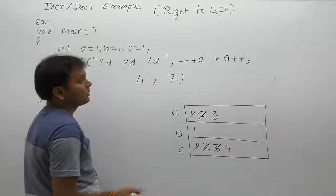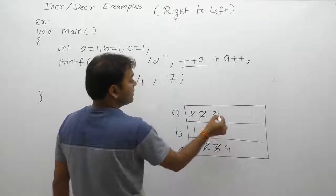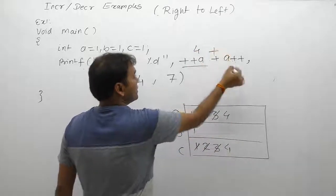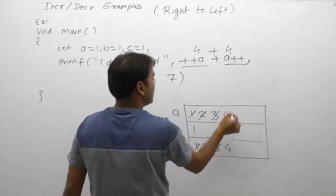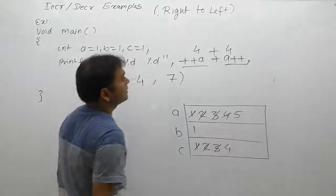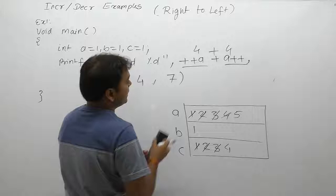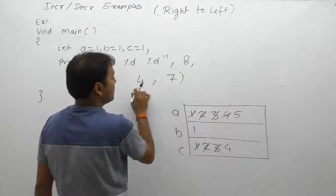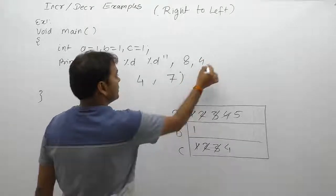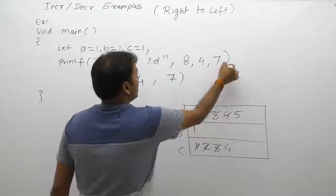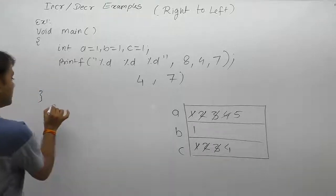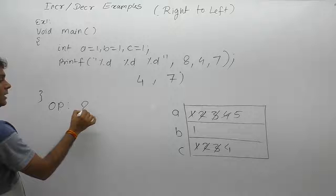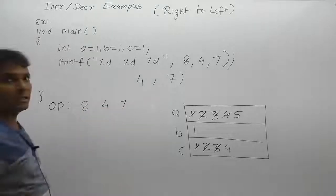For the next expression, the first operator is pre — so first increment, then replace. The next is post — so first replace, then increment. The result is 4 plus 4 equals 8. Therefore, the overall output is 8, 4, 7. Output is eight four seven — clear!